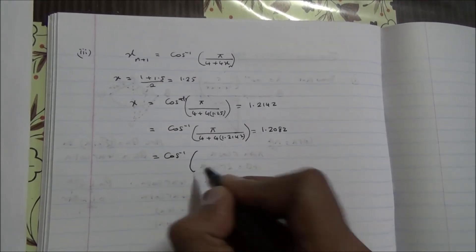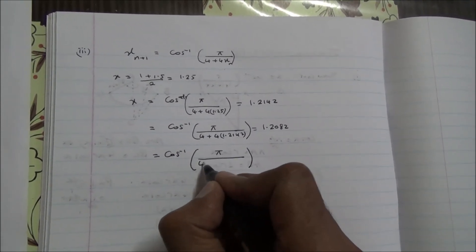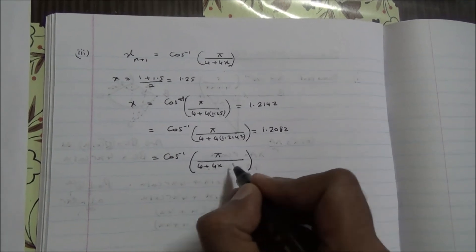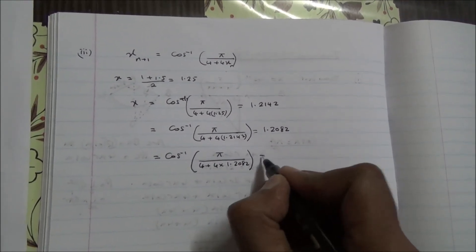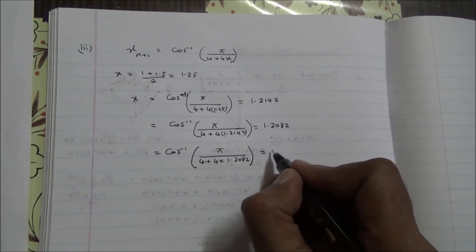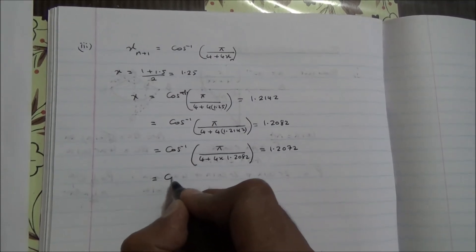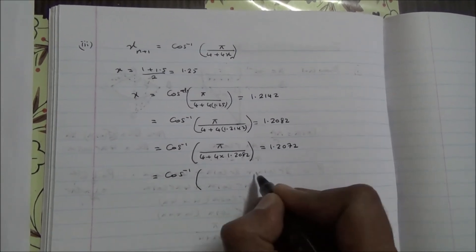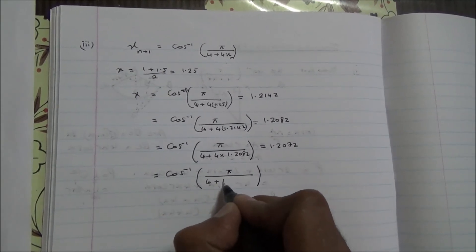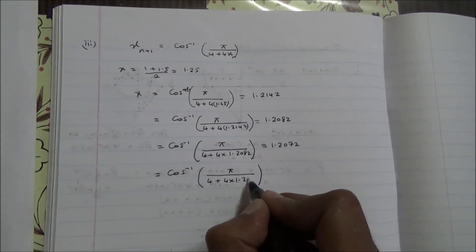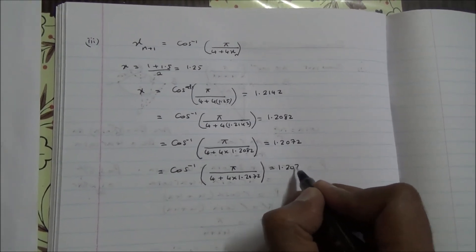Then, inverse cos, what we're doing right now, we're trying to find enough iterations. Four times 1.2082, and if you do it, your calculator will just do the magic for you, 1.2072. Again, same story, π over 4 plus 4 times 1.2072, and this time it's going to be 1.2070.